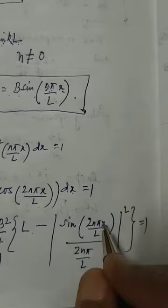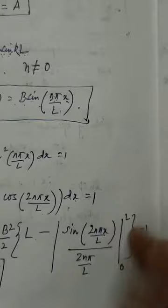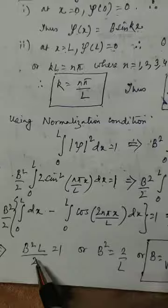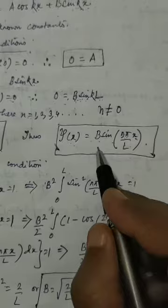Evaluating the limits: sin(0) = 0, and at x = L, the L cancels and we get sin(2nπ), which is 0 since n is an integer. So the entire cosine term vanishes and we are left with B²L/2 = 1. Therefore B² = 2/L and B = √(2/L). We have finally found B.